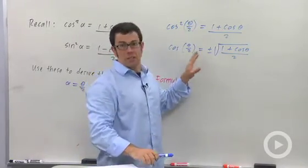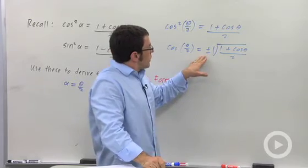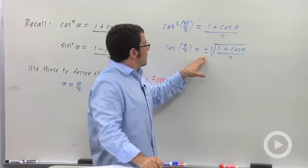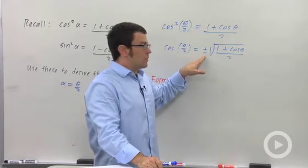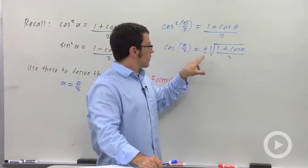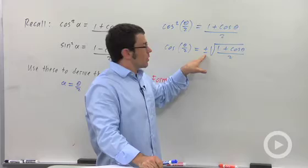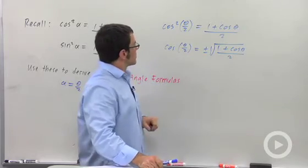Now, with the plus or minus, the plus or minus stays in the identity. The way we determine the sign of the final answer is we have to draw a unit circle and determine what quadrant we're in. So there's a little bit of work involved, but we can't say in the formula whether or not we're going to get a positive or negative answer.